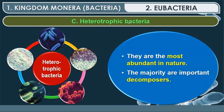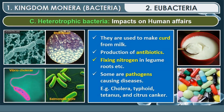Heterotrophic bacteria are the most abundant in nature and the majority are important decomposers. Their impacts on human affairs include: making curd (Lactobacillus), production of antibiotics, nitrogen fixation in leguminous plants (e.g., Rhizobium). Some are pathogens causing diseases like cholera (Vibrio cholerae), typhoid (Salmonella typhi), tetanus, and citrus canker — a plant disease. Bacteria are both helpful and harmful.